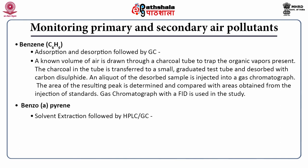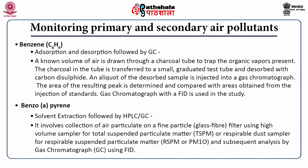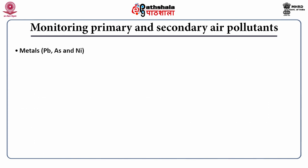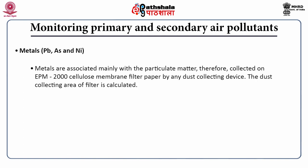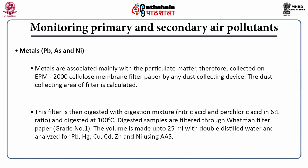Benzopyrene is measured by HPLC or GC. It involves collection of air particulate on a fine particulate filter using a high volume sampler for total suspended particulate matter or a respirable dust sampler for respirable suspended particulate matter. Metals like lead, arsenic and nickel are associated mainly with particulate matter and are therefore collected on EPM 2000 cellulose membrane filter paper by a dust collecting device. The filter is digested with a digestion mixture; the digestate is filtered through Whatman filter paper, volume made up to 25 ml with double distilled water, and analyzed by AAS (Atomic Absorption Spectroscopy).